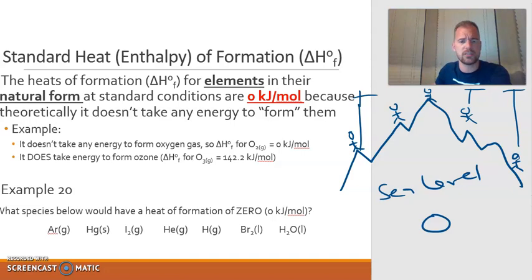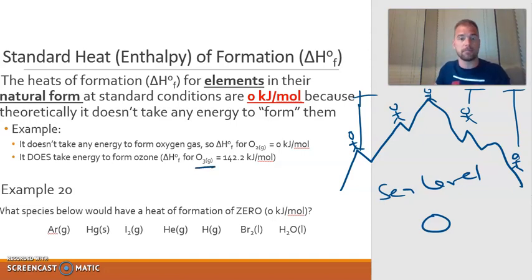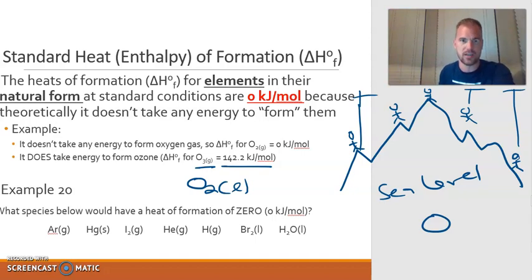It doesn't take any energy to form oxygen gas because oxygen gas is the natural form of oxygen, so the heat of formation is zero. But it does take energy to form ozone, O3, because oxygen does not naturally come as O3 — we've decided O2 is its natural form. Similarly, O2 liquid would have a heat of formation because it would take some energy to go from oxygen gas to oxygen liquid.